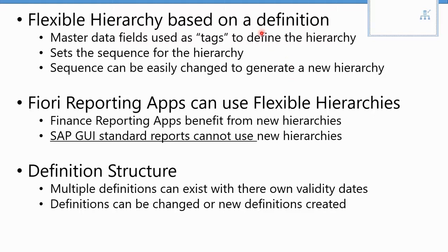The key concept is that flexible hierarchies are based on a definition, and there's a specific app called Manage Flexible Hierarchies to launch this capability. Master data fields on the cost center or profit center are effectively used as tags to define the hierarchy. You can think of it as using metadata — when you use these tags or fields, this sets the sequence for the hierarchy. The sequence can be easily changed to generate a new hierarchy, and once it's defined, the hierarchy is automatically generated. Fiori reporting apps can then take advantage of these flexible hierarchies, and any financial reporting app in Fiori can benefit from the new hierarchies.